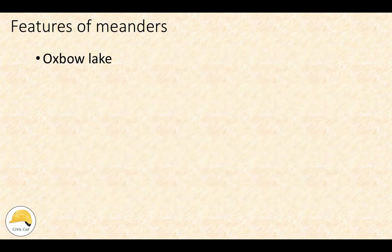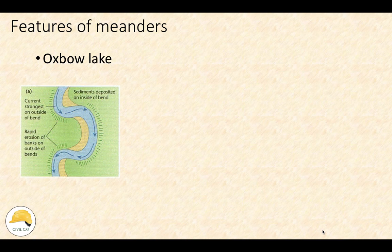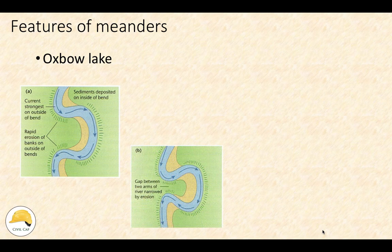Another feature is the oxbow lake. Meander migration is a very important feature. The oxbow lake develops step by step in a different way. The sedimentation and erosion are continuous. In a loop, we have sedimentation, and we have two arms in this loop with a flood or flow.